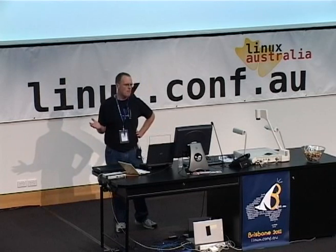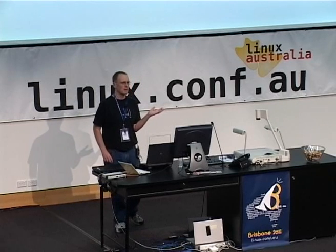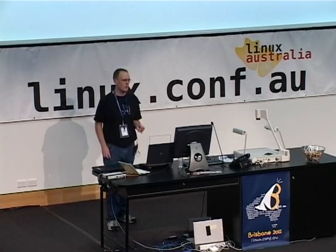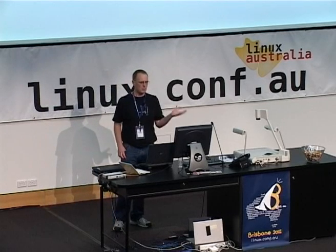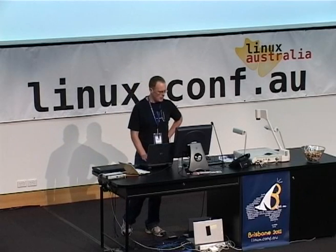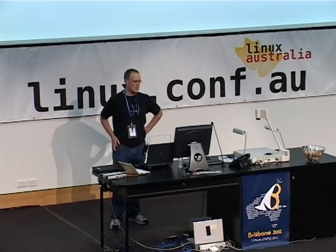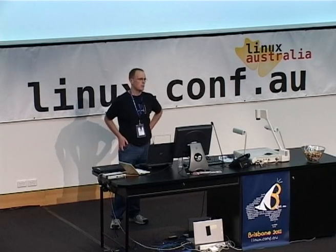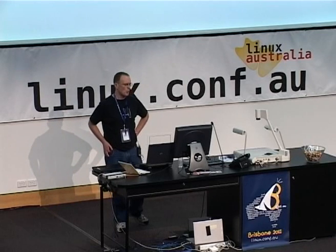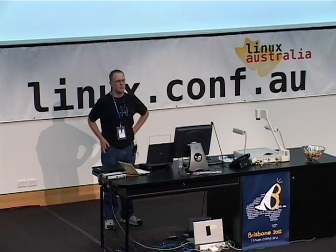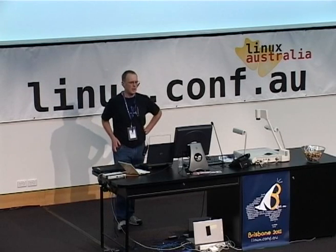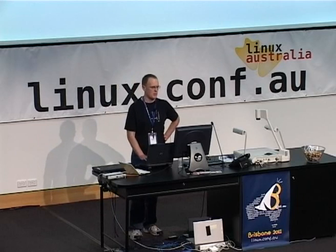A Web Accelerator off the shelf gives you 1 to 5,000 hits per second. That is going to get you through Slashdot, through Reddit. It might not get you through the front page of Yahoo, but it will get you a long way. As a general outline: it caches per URL or per page, is optimised to grab objects from a server behind it, caches them, serves full web pages, and talks HTTP in both directions. On commodity hardware you can get 20,000 hits per second in real-world situations, and 100,000 hits per second on benchmark values.